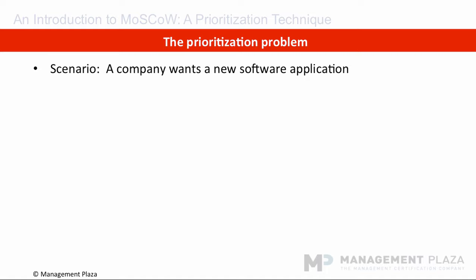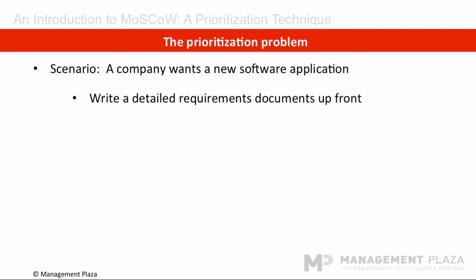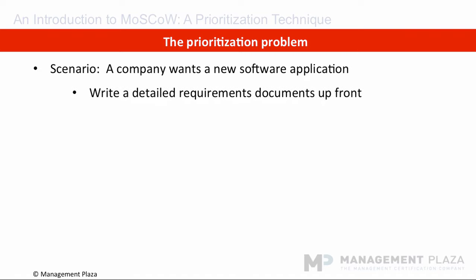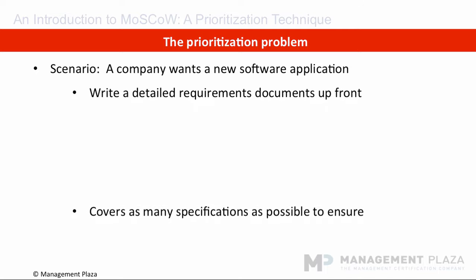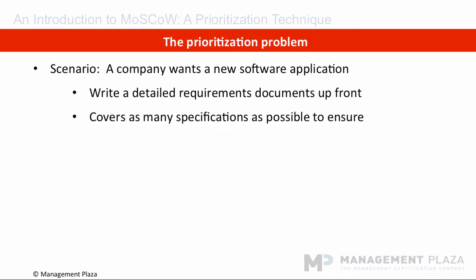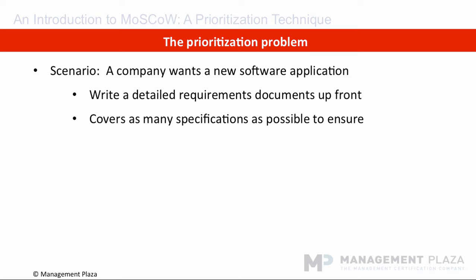The prioritization problem. For example, a company decides it wants to create a new software application. The traditional approach is for the project team to sit down and write a long 100 to 200 page document that will bore the customer to death and include all user specifications, as they are worried they might leave something out, as they have only one chance to get these requirements and make sure the solution provides the expected benefits. So as you can imagine, there are a number of issues with this approach.